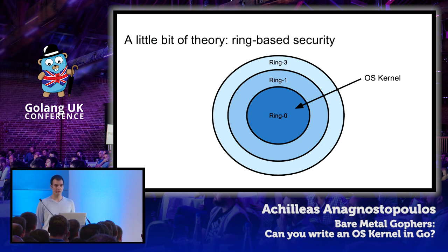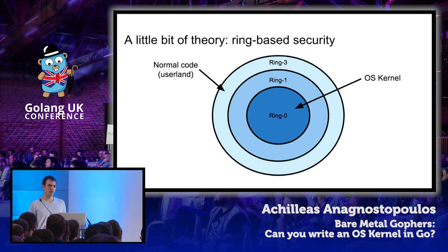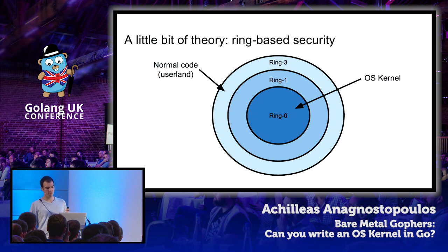Code running on the outermost ring runs with the lowest possible privilege level — that's where typical everyday user applications such as your editor or terminal run. Whenever a userland app needs to perform a privileged operation, it needs to go through the kernel using a mechanism known as a system call. For the purposes of this talk, we will focus exclusively on writing code that runs at ring zero.